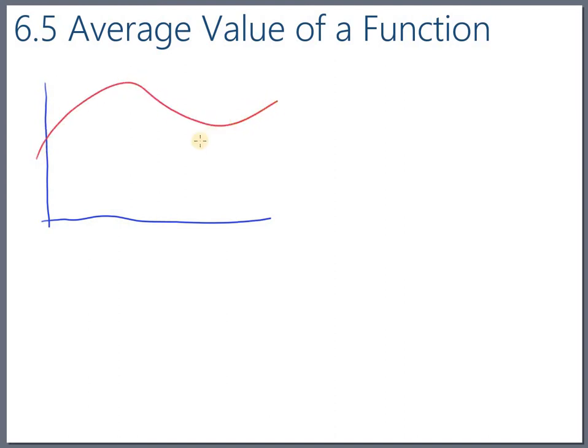Suppose the function looks like this, and I guess I should have said the average value of the function on a closed interval, so we need to actually say from somewhere to somewhere else, including the endpoints, including a and b. So let's say that we were interested in finding the average value of this function from here to here, from a to b.